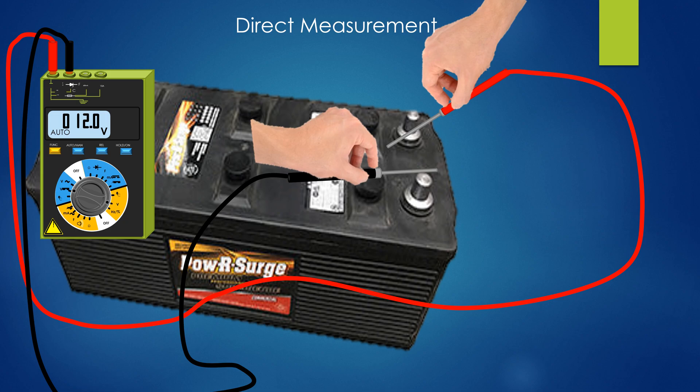Besides, we can measure directly some AC voltages like 230V, 400V, etc., by using a multimeter or by using a suitable voltmeter through direct connection as shown.